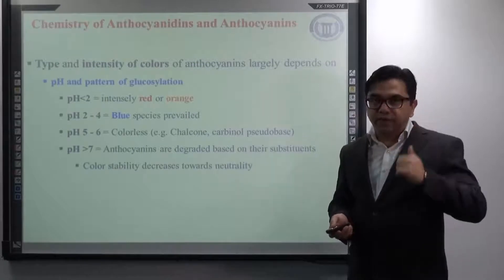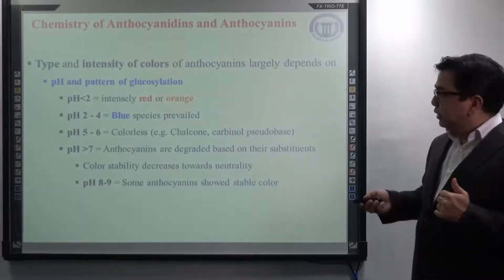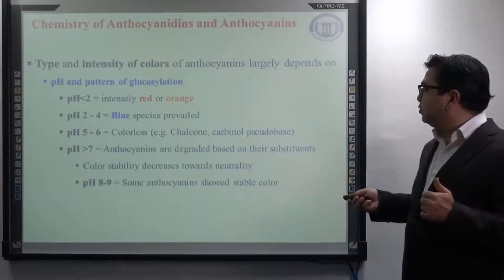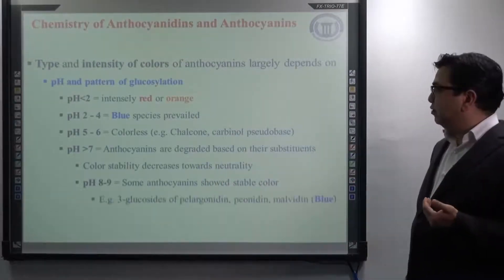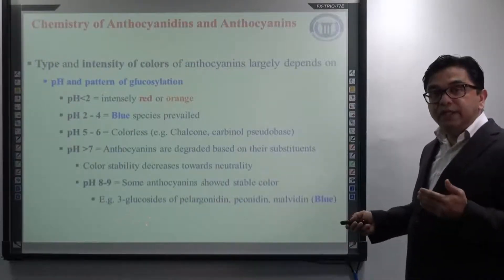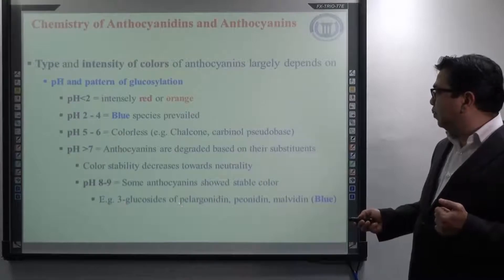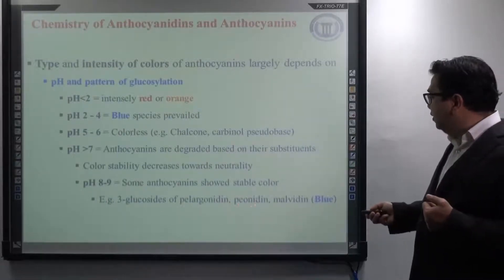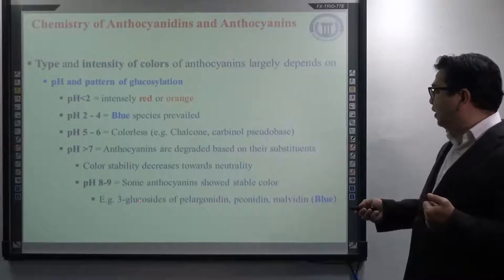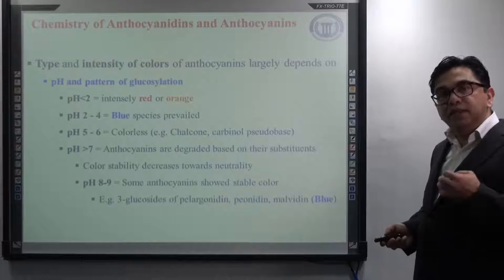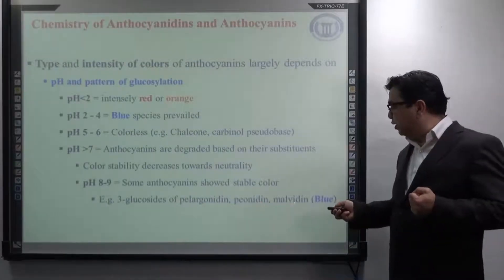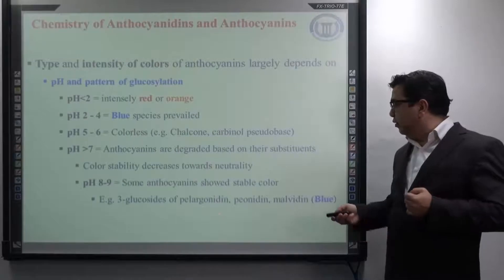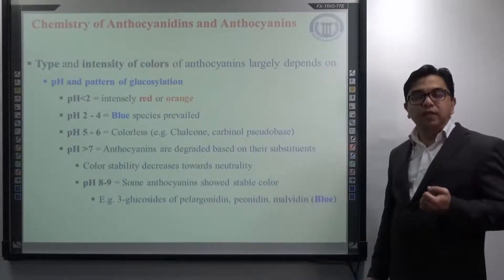Interestingly, at pH 8 to 9, some anthocyanins show very stable colour. For example, 3-glucosides of pelargonidin, 3-glucosides of peonidin, and 3-glucosides of malvidin are found to be stable around pH 8 to 9 and show blue colour. Now, the difference in chemical structure between pelargonidin, peonidin, and malvidin is: pelargonidin has only one hydroxyl group on ring B, whereas peonidin and malvidin have a methoxy group on ring B.